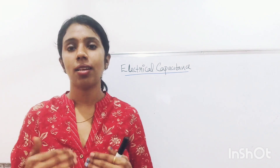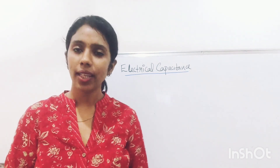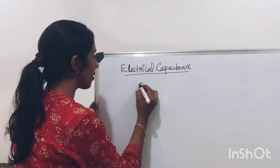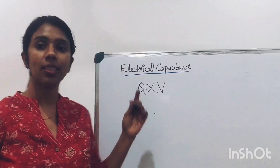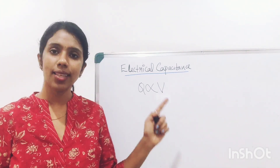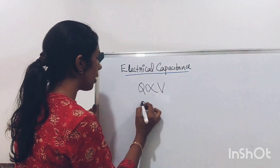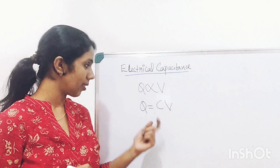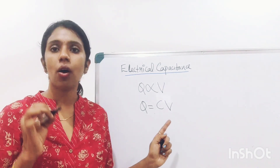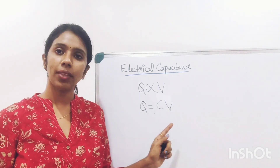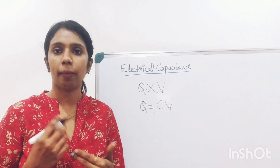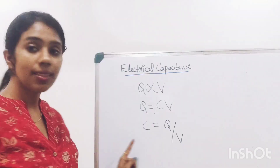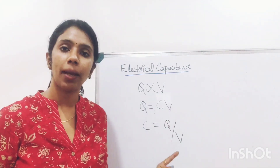As you decrease the charges, the potential also decreases. So you can say that charge is proportional to potential, or Q is proportional to V. I can write this equation as Q = CV, where C is known as the capacitance — the proportionality constant in this equation. From this equation, we can arrive at C = Q / V.